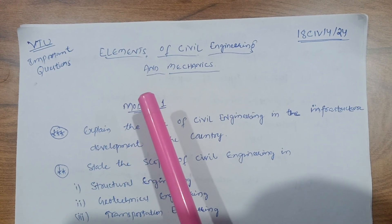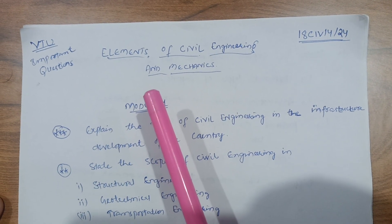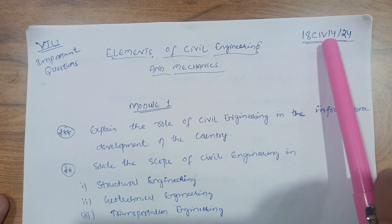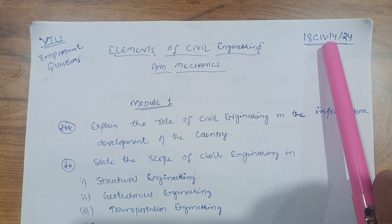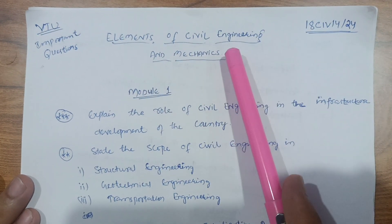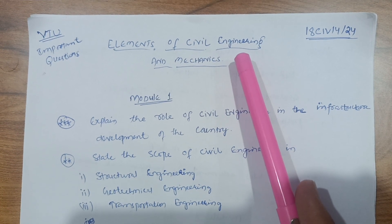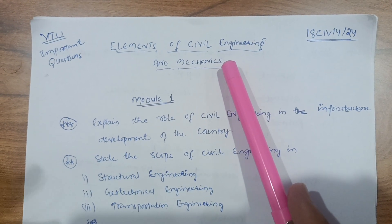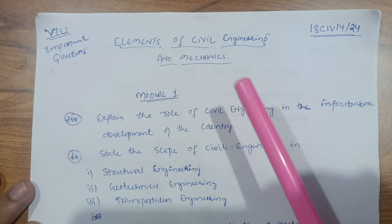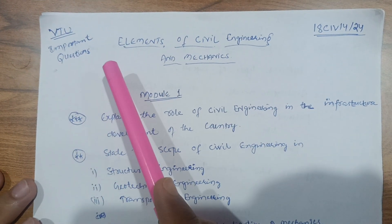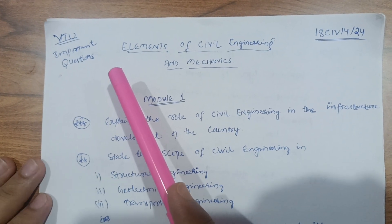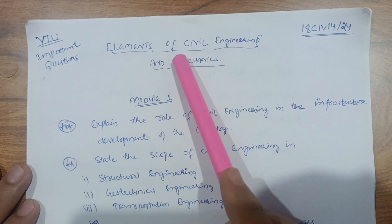Hello friends, welcome back to another video on Elements of Civil Engineering and Mechanics. It is a first semester subject with code 18CIV14, and also a second semester subject coded 18CIV24. This subject is of concern for students from branches other than civil and mechanical engineering, and it is a core subject for civil and mechanical engineering. In this video I want to discuss some important questions for the VTU examination, which is probably the day after tomorrow.